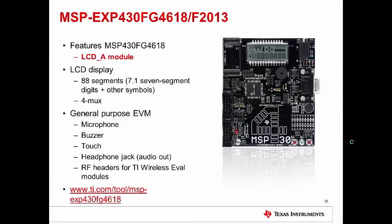The first is the F4XX experimenter's board. This features an MSP430 FG4618 device, which has an LCD-A module. The EVM has an 88-segment LCD that displays digits and a number of other symbols on it, and it uses Formux mode. This is a general purpose EVM, so it has a variety of different interfaces to show off the different modules of this MSP430 device. These include a microphone, a buzzer, touch capability, a headphone jack with audio out, and RF headers for TI wireless eval modules.